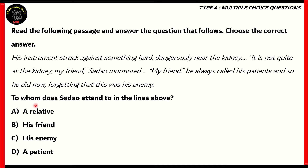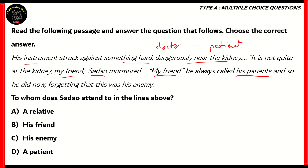Let's look at our question: To whom does Sadao attend to in the lines above? We can see that there is someone named Sadao. He has an instrument which struck against something hard, dangerously near the kidney, so we can assume that he's a doctor treating a patient. It says 'my friend' is what he always calls his patients, forgetting that this was his enemy. So he's treating a patient who happens to be an enemy — this is probably wartime. Since the name Sadao implies he's Japanese, we can safely assume this is between the Japanese and the Americans in World War II.